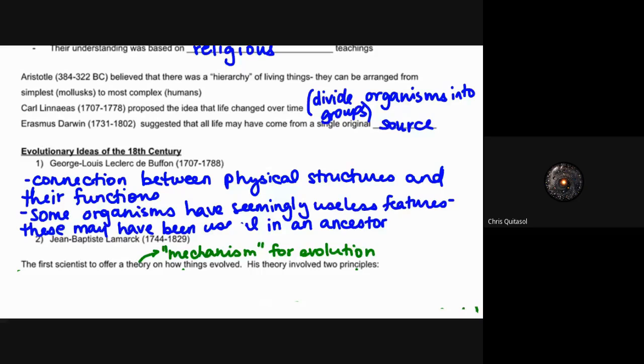These organisms have seemingly useless features, and he found that there are a lot of them within species, humans included. They used to be useful at some point in time but they're no longer as useful anymore. We talk about the appendix and other aspects with regards to humanity having these vestigial features. Buffon was the first person that really suggested this idea.